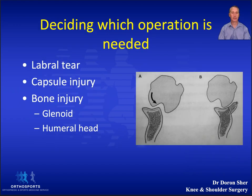So if you decide to operate as a surgeon, you need to match your operation to the individual patient. Essentially there are three options: an arthroscopic procedure, an open soft tissue procedure, or an open bony procedure.